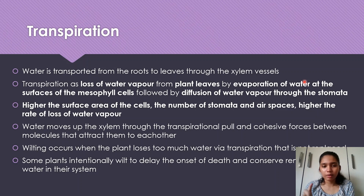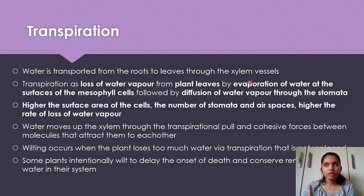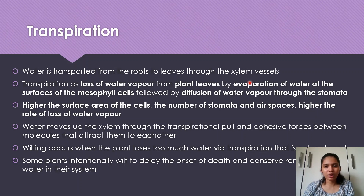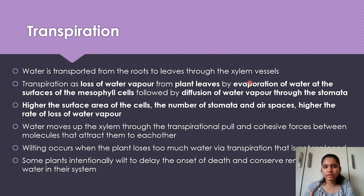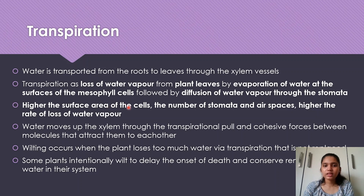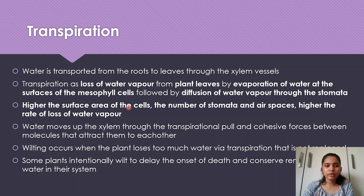In MCQ definitions of transpiration, you may see it phrased as 'the evaporation of water from the stem and leaves of plant cells' — that is a correct answer to select. Also remember: the higher the surface area of the cells, the higher the number of stomata and air spaces, the higher the rate of loss of water vapor, because the rate of diffusion is higher.